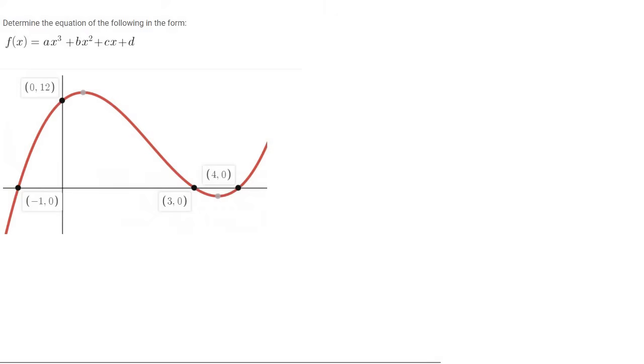Alright guys, so here's a little trick. Whenever you are asked to find the equation of a graph and they give you the x-intercepts, then it's very easy because here's the x-intercept. So those x-intercepts are minus 1, 3, and 4.